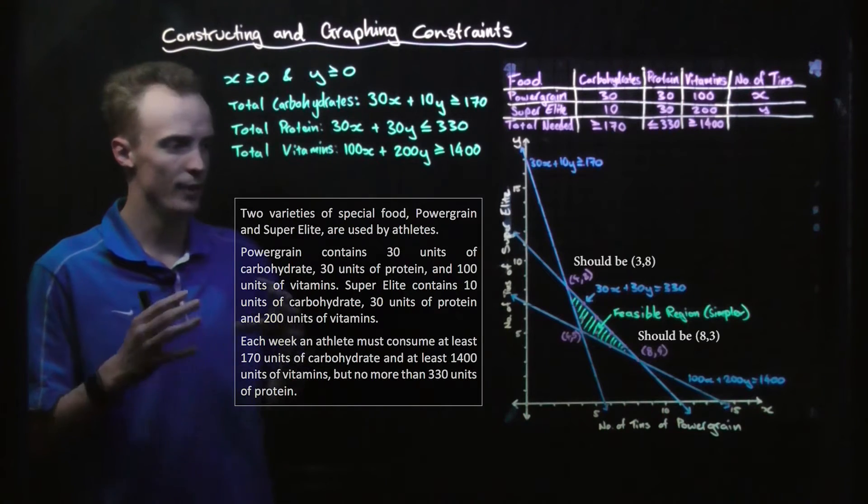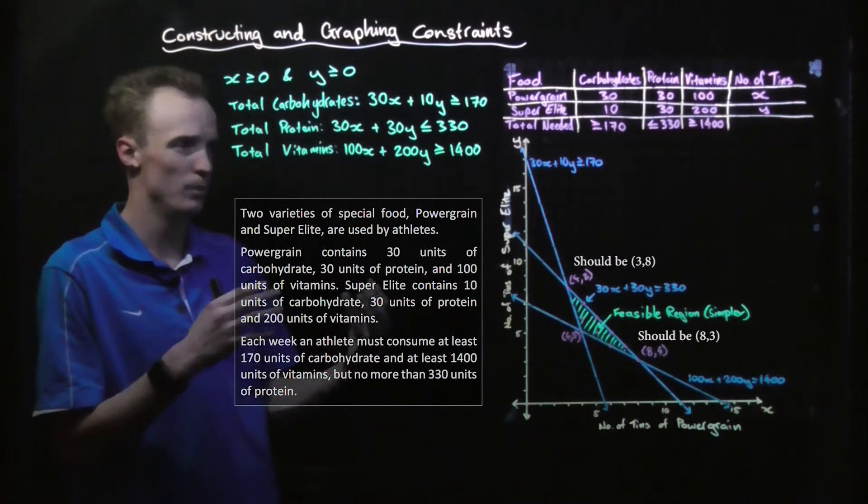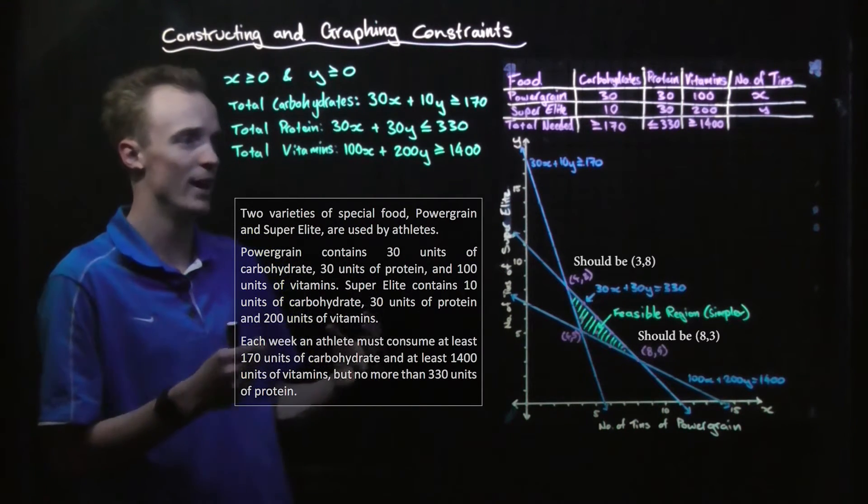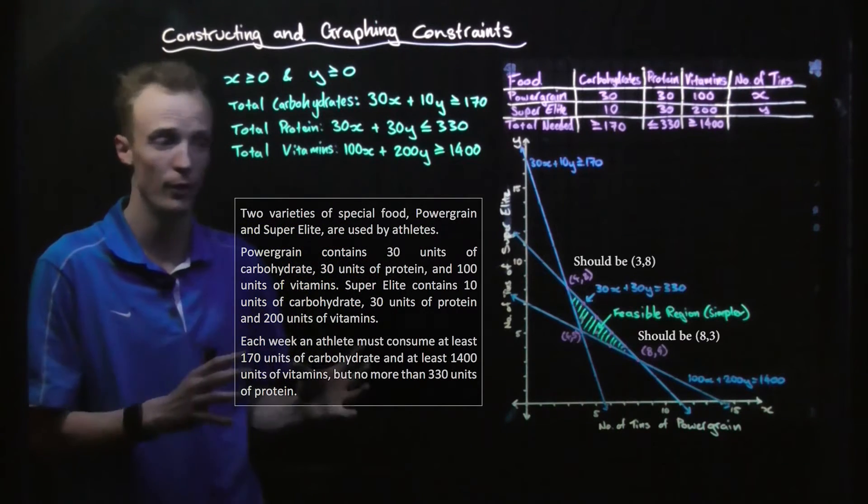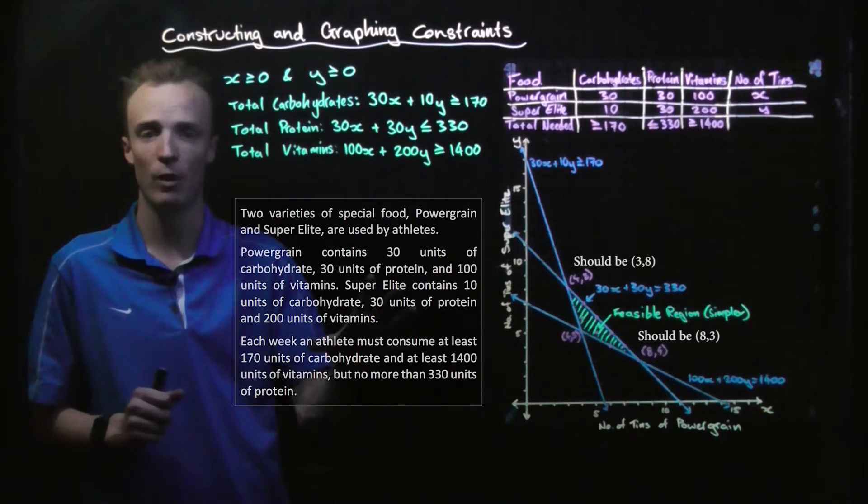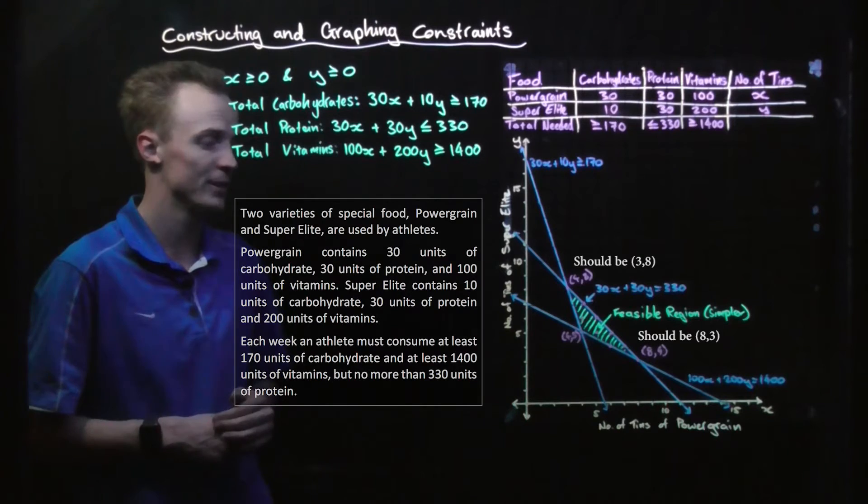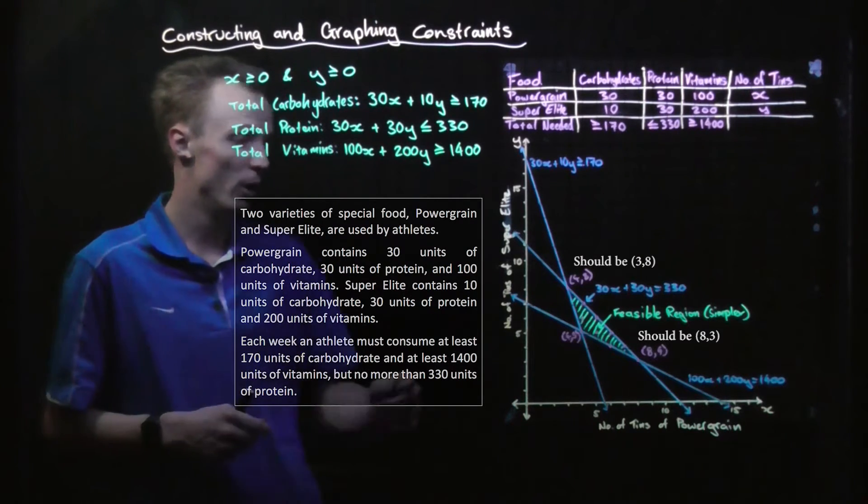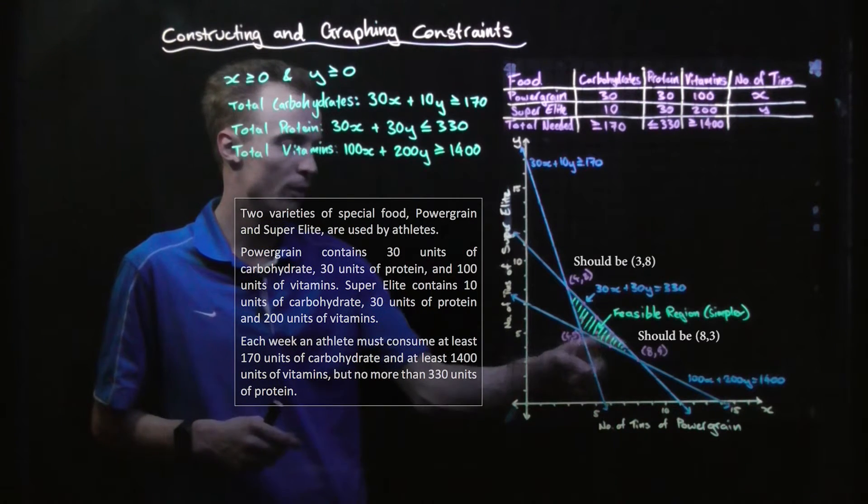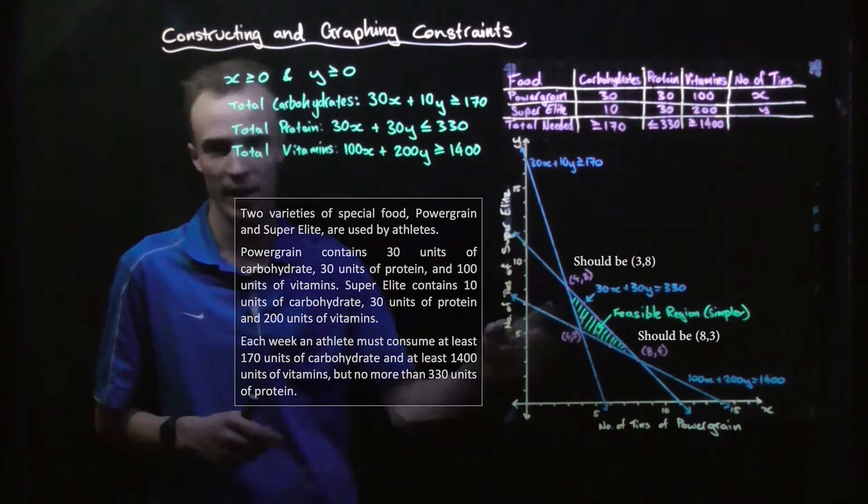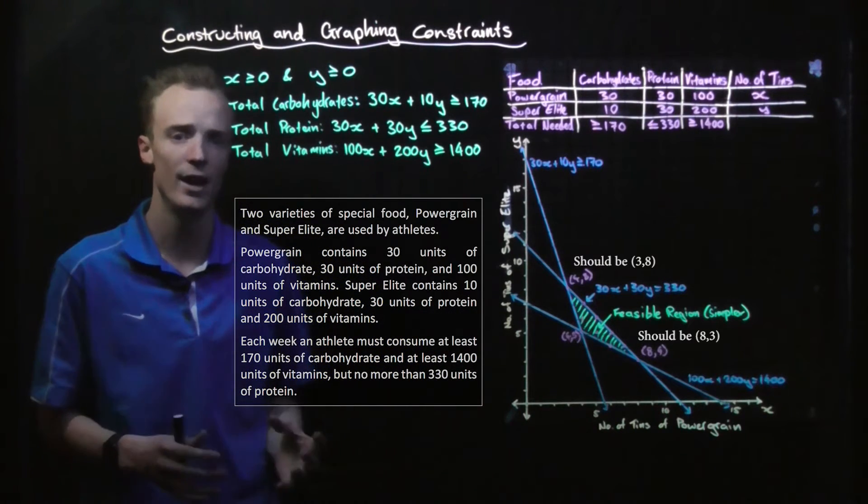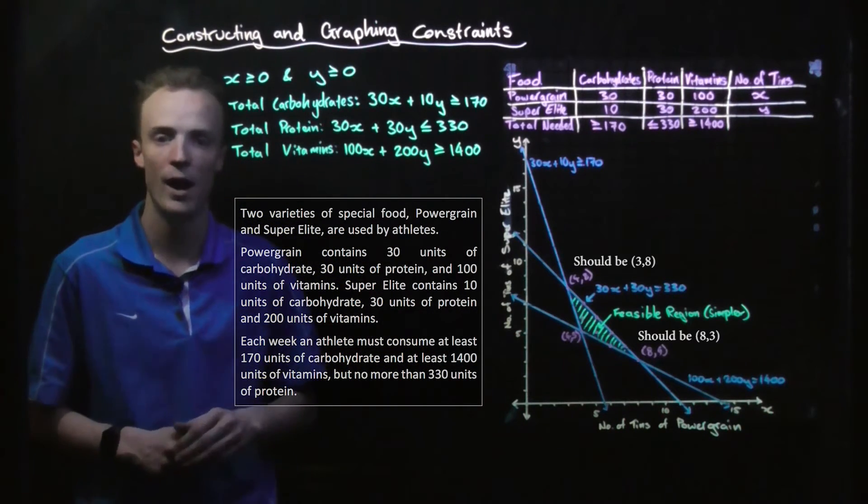So what I've done now is I've identified where all of our feasible combinations, possible combinations of power grain and super elite food that will fit our problem requirements, our diet requirements. So how many are there? Well, there's 1, 2, 3, 4, 5, 6, 7, 8, 9, 10 possible different combinations that the athlete could buy.